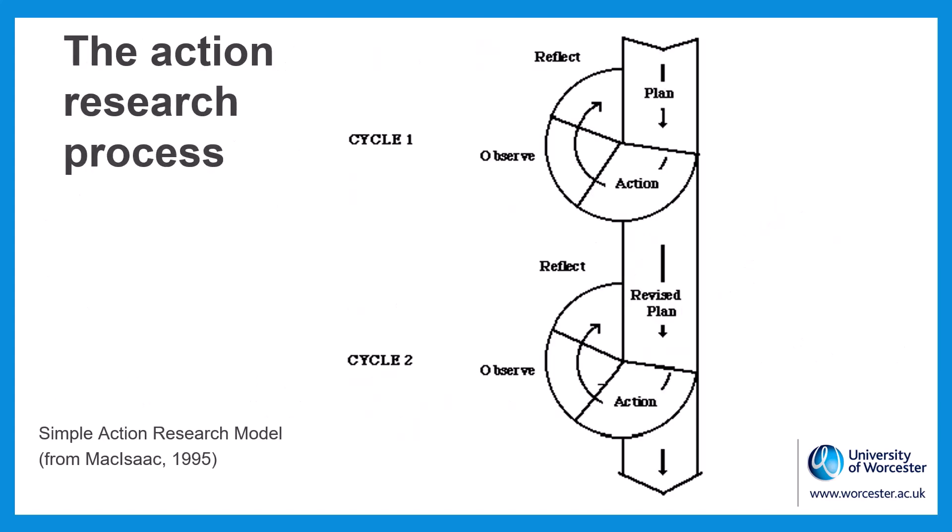Stephen Chemist has developed a simple model of the cyclical nature of the typical action research process. As shown, each cycle has four steps: plan, act, observe, and reflect.